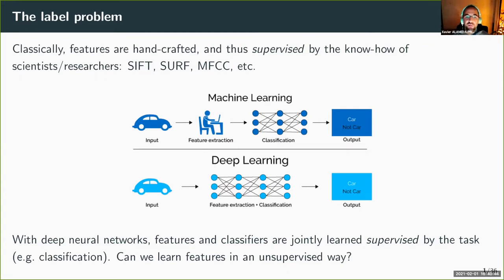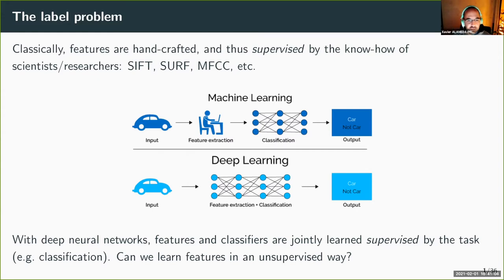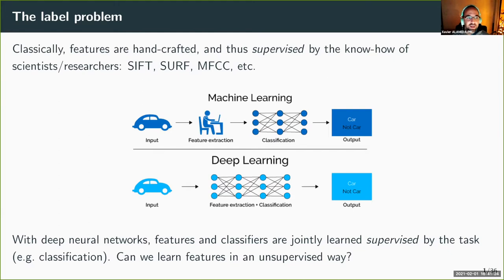After feature extraction, a classifier was trained. Then deep learning arrived, and with deep learning we jointly learn the classification and the feature extraction together. There is no separate feature extraction step — everything is end-to-end, supervised by the task, such as image classification or object detection. The features we extract are not handcrafted but are trained for the task at hand.